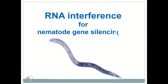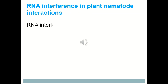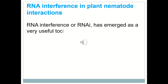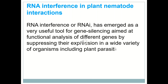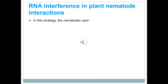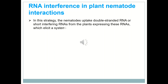Today our topic is RNA interference for nematode gene silencing in plants. RNA interference, or RNAi, has emerged as a very useful tool for gene silencing aimed at the functional analysis of different genes by suppressing their expression in a wide variety of organisms, including plant parasitic nematodes. In this strategy, the nematodes uptake double-stranded RNA or short interfering RNAs from the plants expressing these RNAs, which elicit a systemic RNAi response in nematodes.